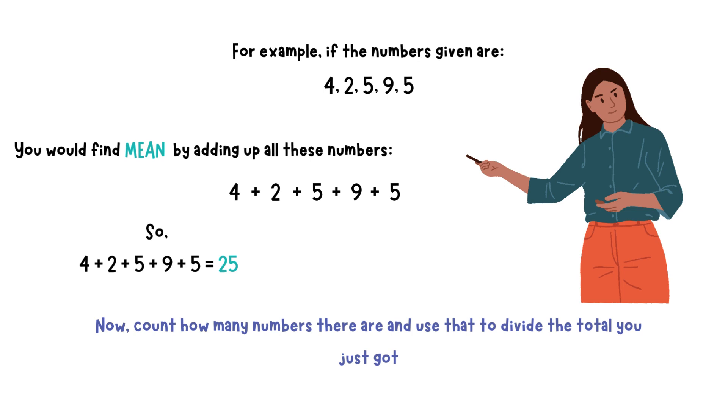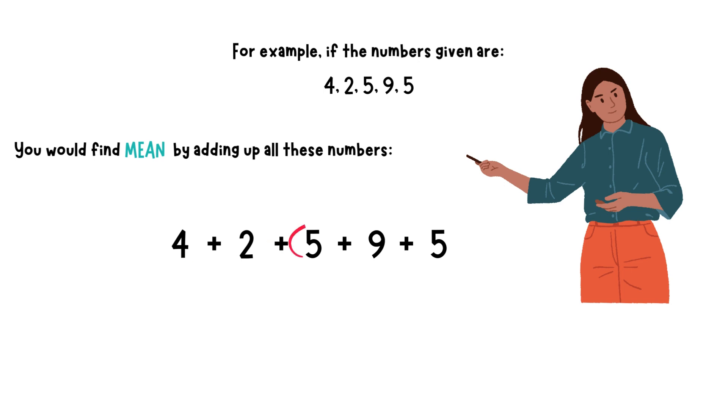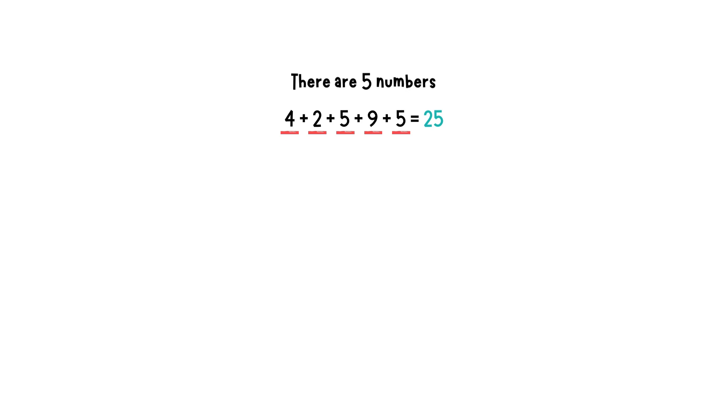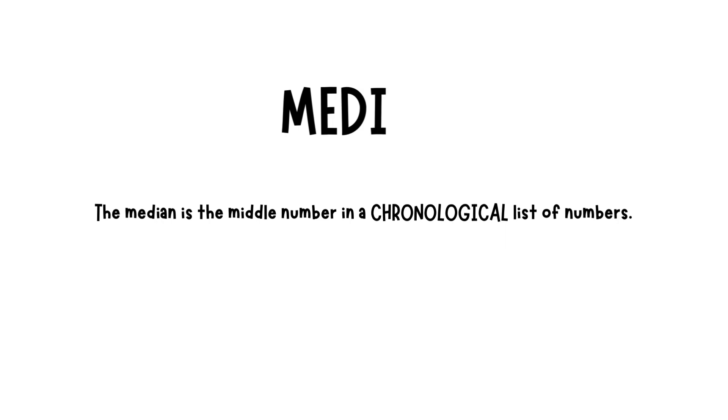Now count how many numbers there are and use that to divide the total you just got, which is 25. So 1, 2, 3, 4, 5, there are 5 numbers. Now divide the total by the number of numbers. 25 divided by 5 equals 5, so the mean is 5.